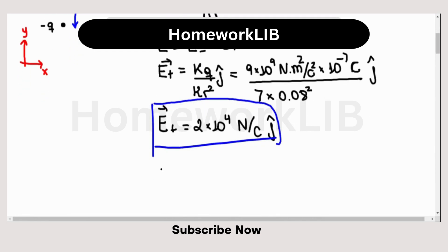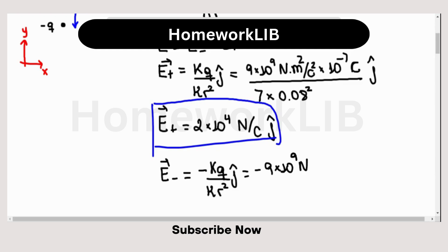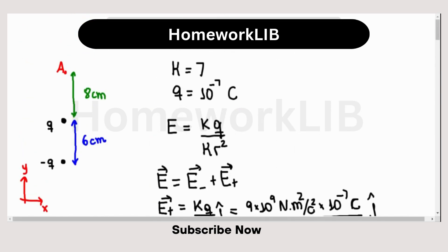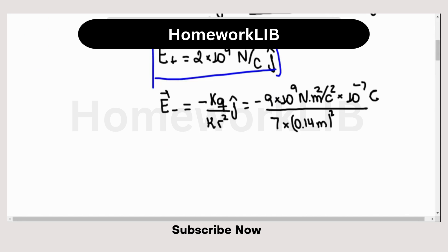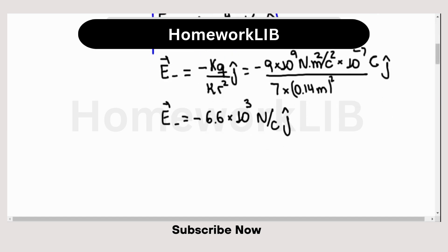Now we calculate the electric field generated by the negative charge. That is minus k times q, divided by kappa times r squared, in the j direction. So that is minus 9×10⁹ times 10⁻⁷, divided by kappa which is 7, times the distance between the negative charge and point A. Notice that this distance is 6 plus 8 centimeters, or 14 centimeters, so it is 0.14 meters squared. Therefore E minus equals minus 6.6×10³ newtons per Coulomb in the j direction.